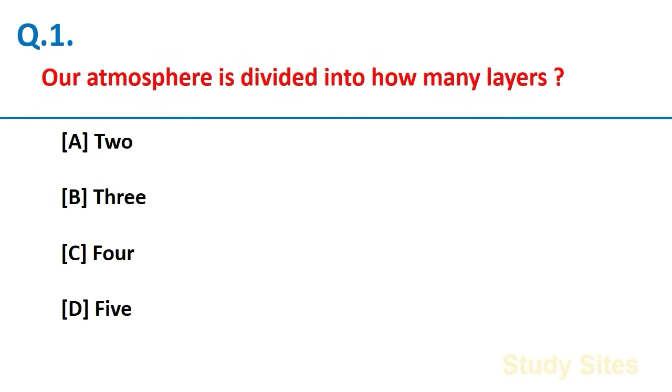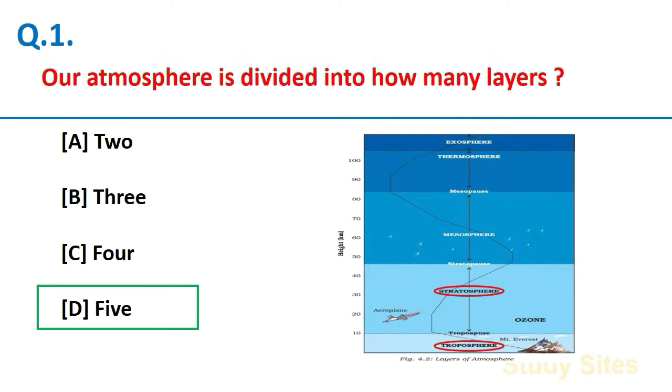Our atmosphere is divided into how many layers? 5 layers. They are Troposphere, Stratosphere, Mesosphere, Thermosphere and Exosphere.